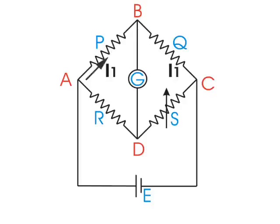The current flowing through resistance P and also through resistance Q is I1, and the current flowing through unknown resistance R and also through resistance S is I2.